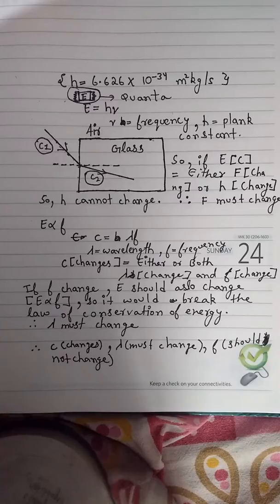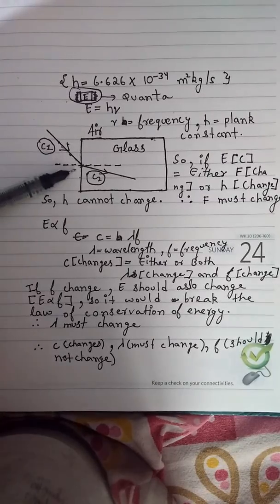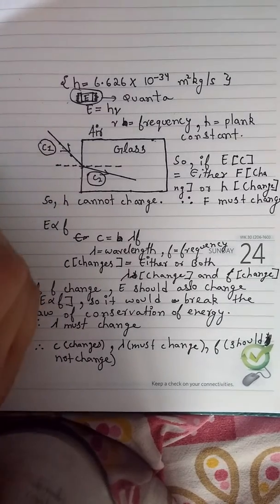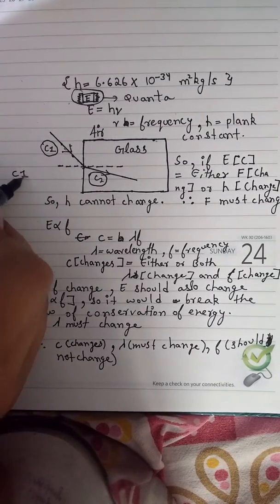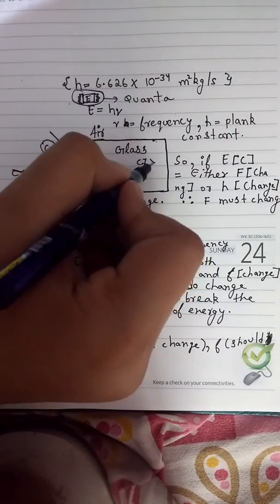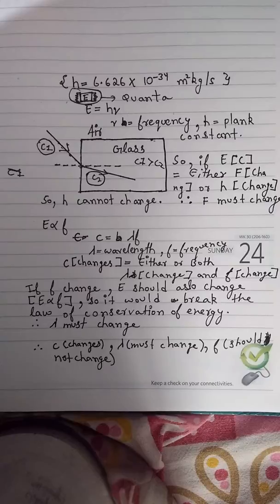Now if light moves from one medium to another, its speed changes. As we know, if light moves from air to glass, then speed S1 is always greater than S2.